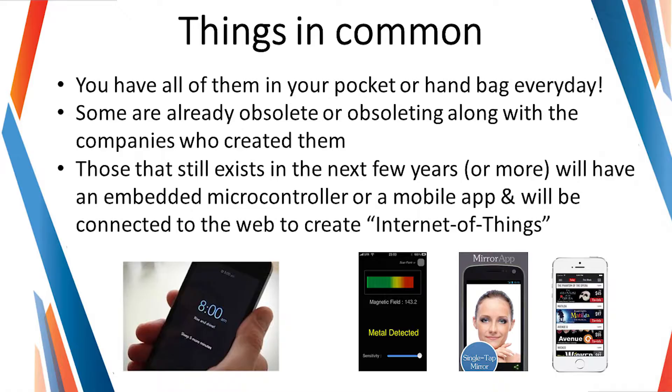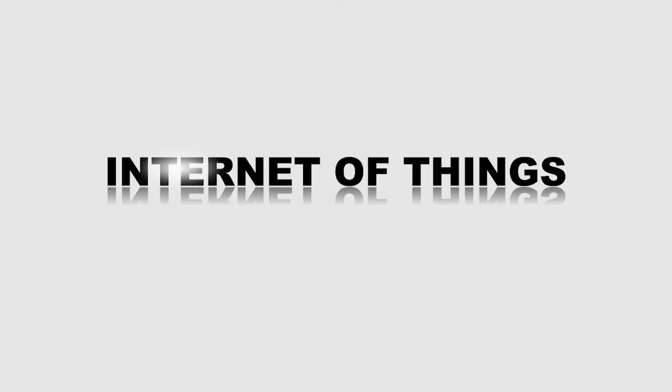All of these things will be connected to the internet to create what we call the Internet of Things. So, if you Google this term, you probably have millions of hits, a lot of definitions on it. My definition of Internet of Things is that, first, it needs to be able to connect, obviously, to the internet, to send data.